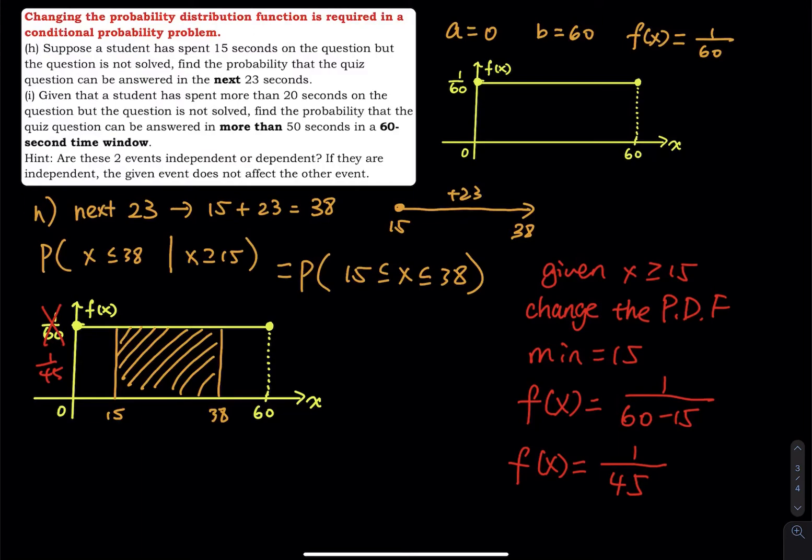So now we go back to our math. Then this is 38 minus 15 times 1 over 45. Oh, by the way, when you do this in your calculator, if you want to do this in one line, you have to use a parenthesis for 38 minus 15.